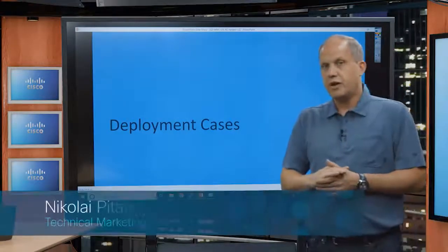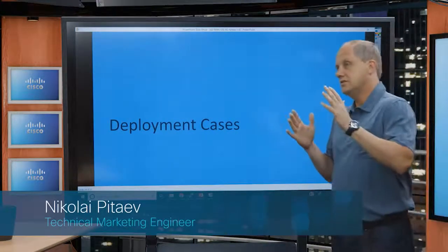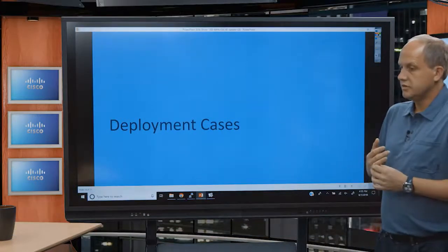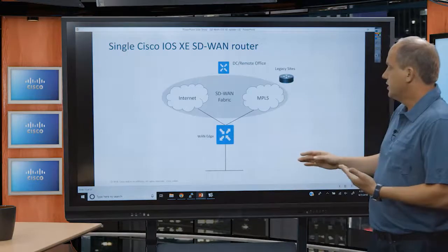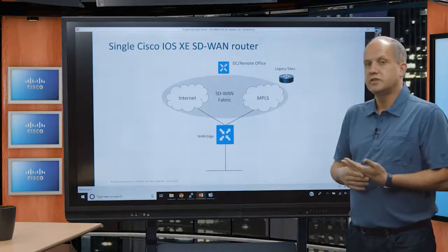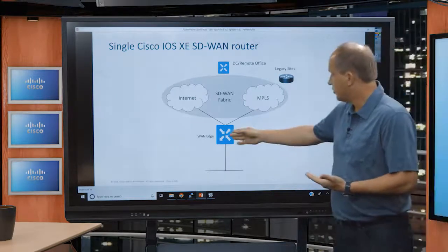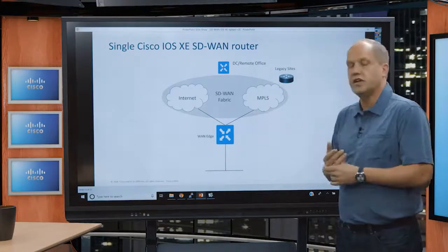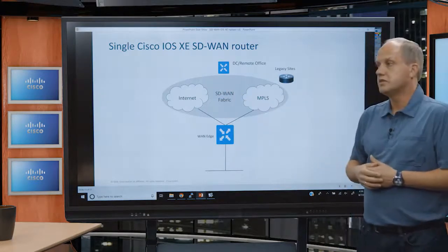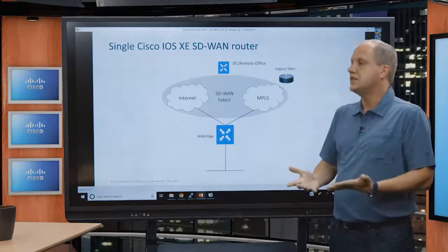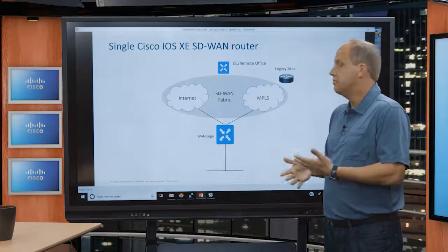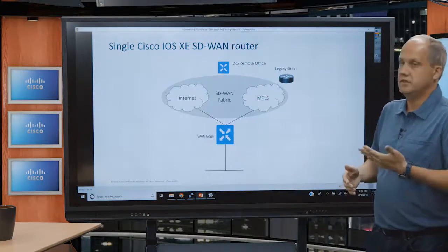The next topic is about deployment use cases. A very simple first use case is to have just one router at the branch — in this case, a vEdge running ISR 4K with an SD-WAN image, connected to both internet and MPLS transport. This is standard SD-WAN interaction; it's a different model type but operates exactly the same manner as a vEdge 1000.